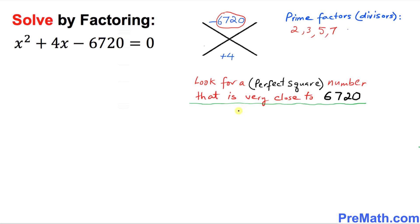We know that pretty close to 6720 is 6400, which can be easily factored as 80 times 80. That means our possible factors of 6720 are going to be really close to 80 and 80.